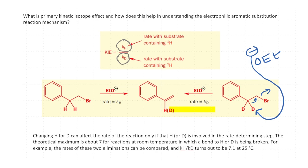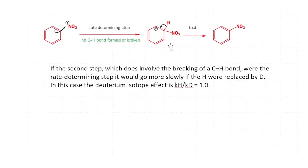This helps us understand whether the carbon-hydrogen bond is involved in the rate-determining step. In the elimination case, we have good evidence that this hydrogen is involved in the reaction, so the C–H bond breaks faster than the C–D bond. Because it is involved in the rate-determining step, the kinetic isotope effect for this reaction is about seven, confirming that the C–H bond is involved in the rate-determining step.